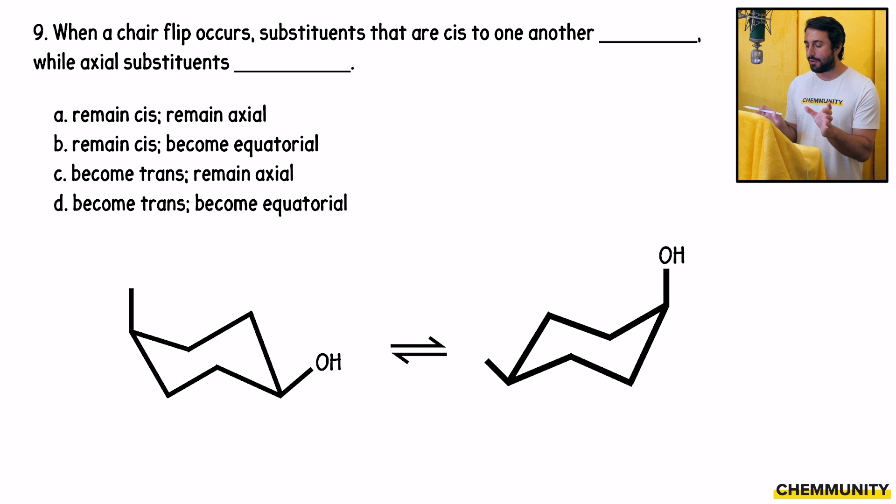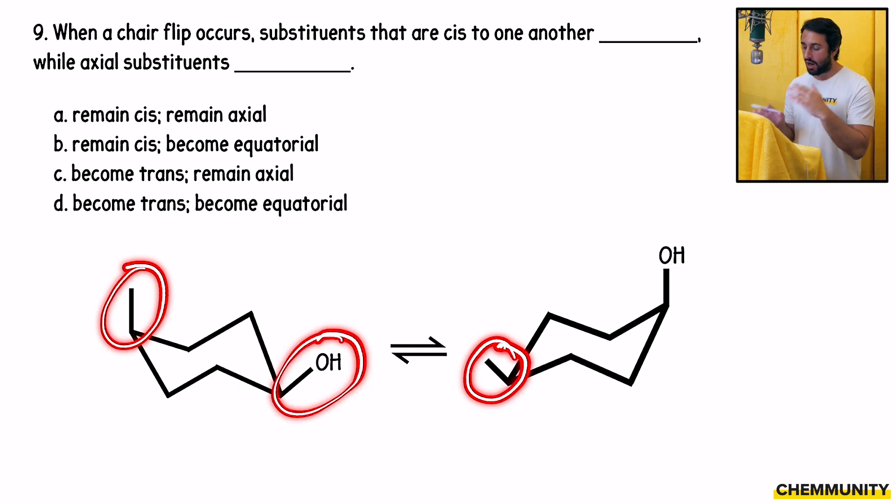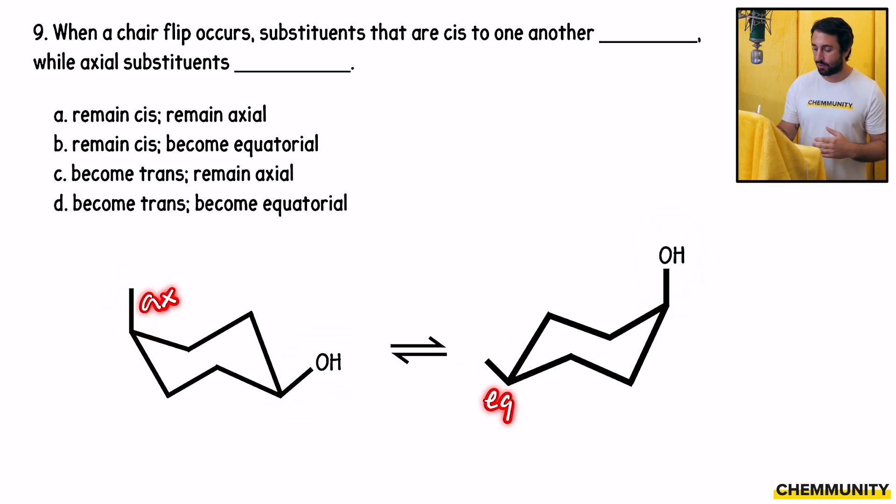The thing that we have to understand about the two chair conformations, if a molecule has substituents that are cis to one another or trans to one another, that is not going to change when the chair flips. That is an aspect of the molecule itself. So when it is cis, it is going to remain cis. These two substituents, the methyl and the hydroxyl, will remain cis to one another. But what happens is that any substituent that is axial in the other chair will be equatorial, and any substituent that was equatorial in the other chair will become axial. So here we have an axial substituent becoming equatorial.